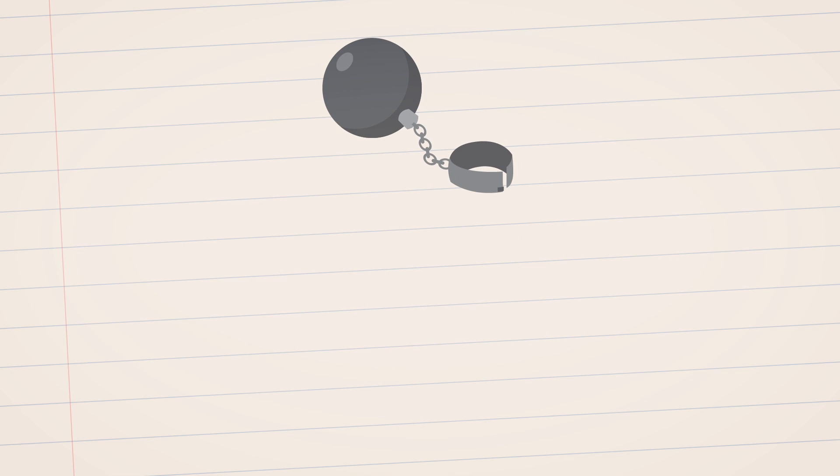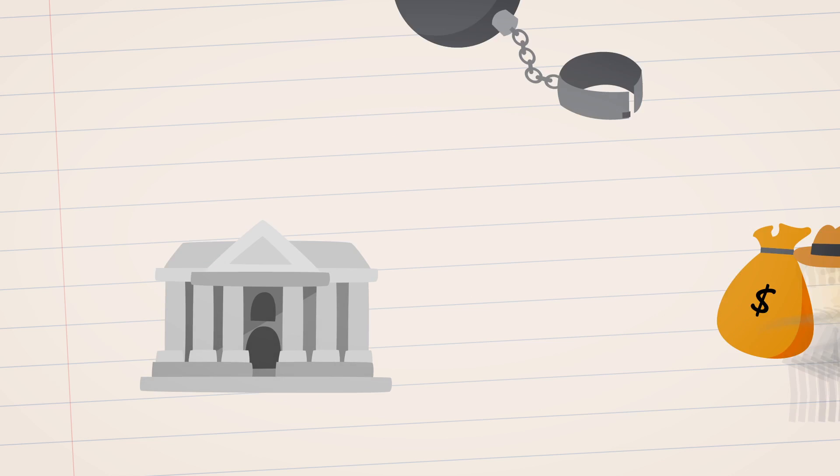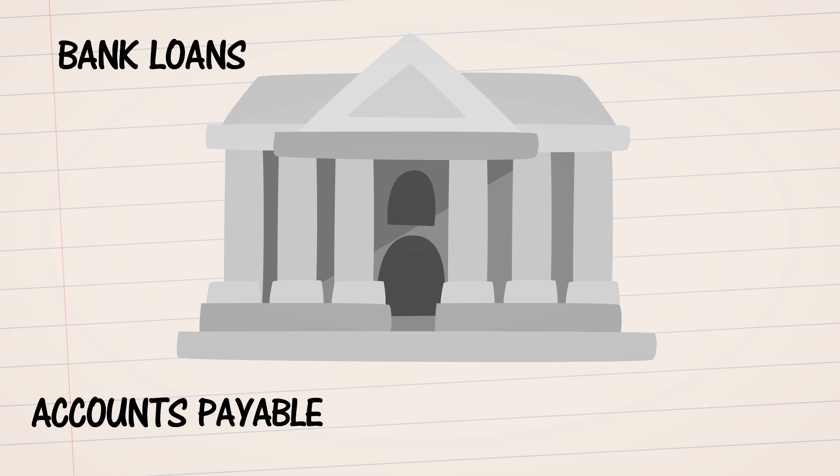Next are the company's liabilities, which are also broken down into two categories. Current liabilities, which include bank loans, accounts payable,